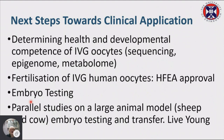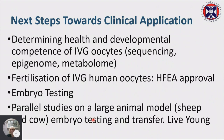We hope to improve the health and development of these in vitro-grown oocytes by sequencing the genome and metabolome. We really want a better optimized system before starting fertilization and going for a license — we don't want to start fertilization in a very suboptimal system. We're also running parallel studies on large animal models in sheep and cow. We've used this culture system to study the effects of age, chemotherapy, and the role of signaling pathways, and we're now using it to study the potential to generate oocytes from putative germline stem cells — complete in vitro oogenesis.